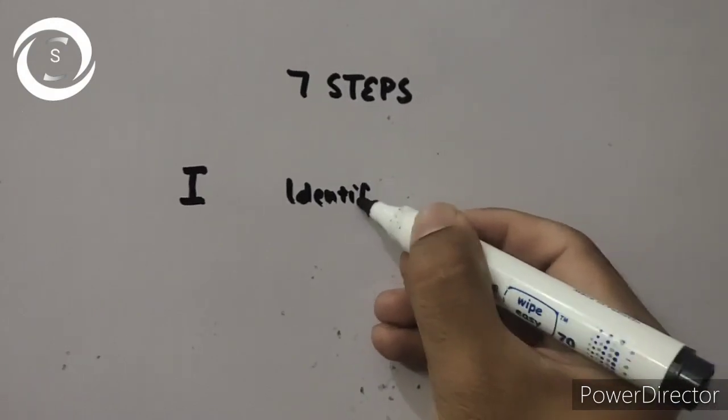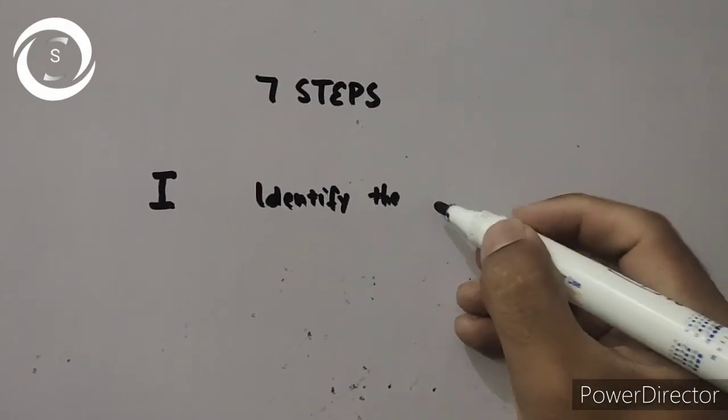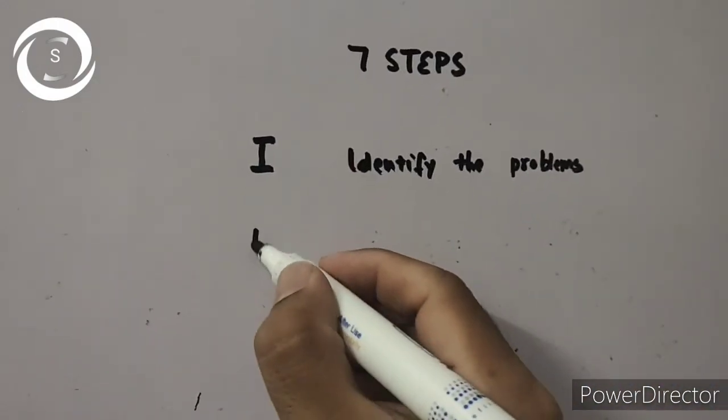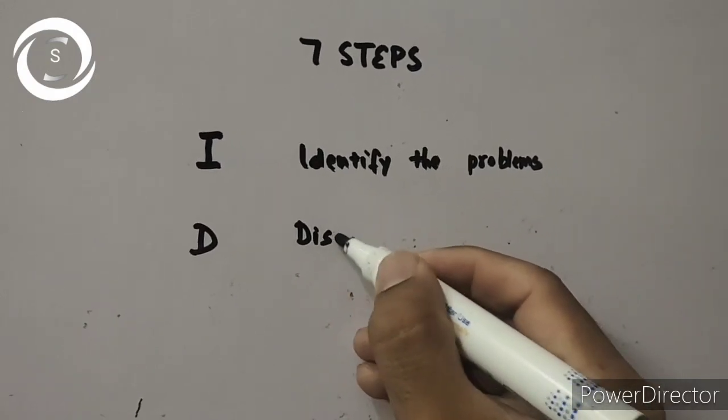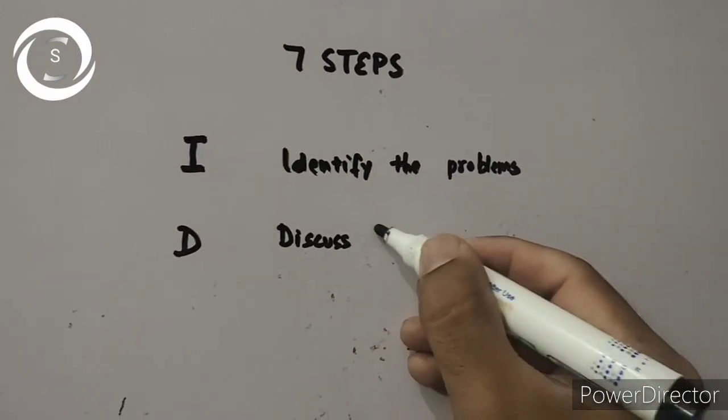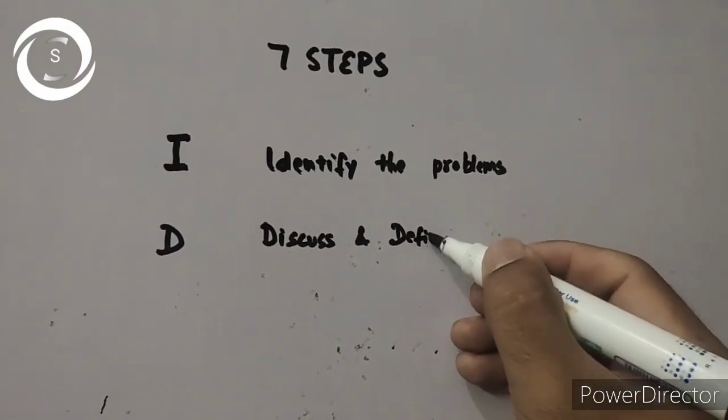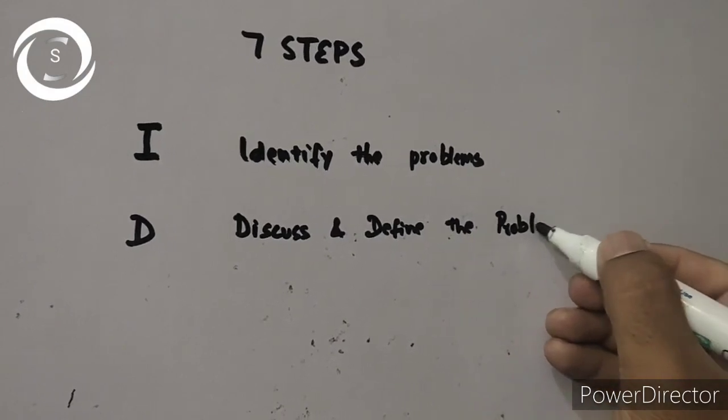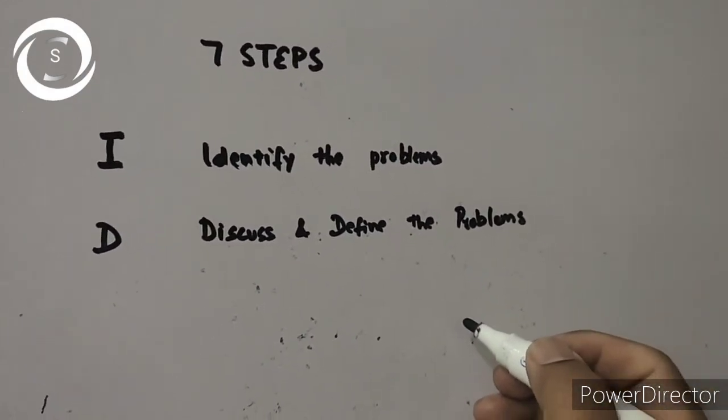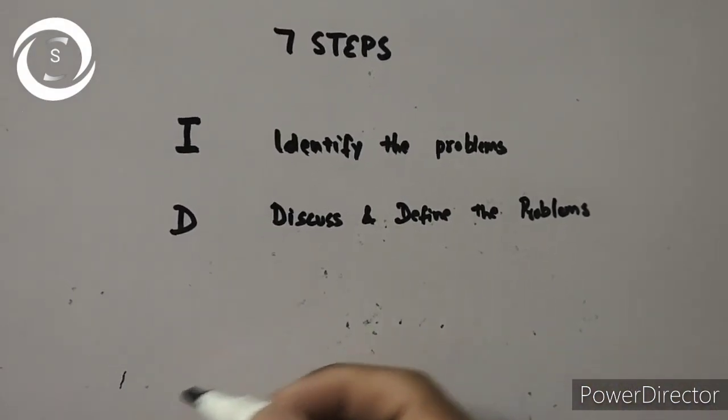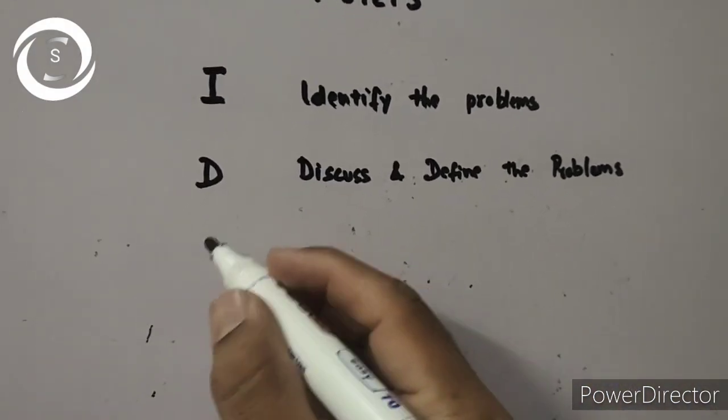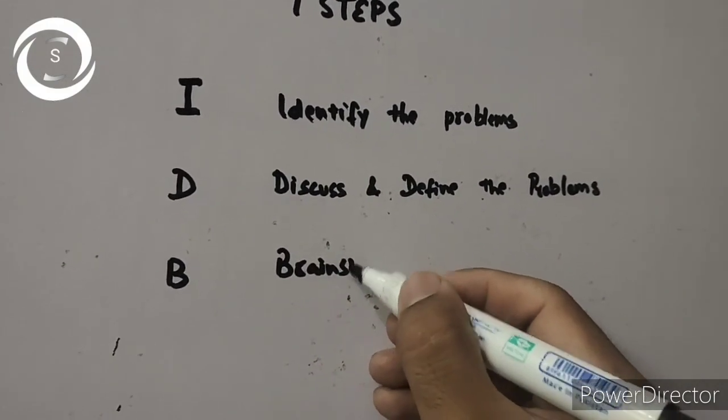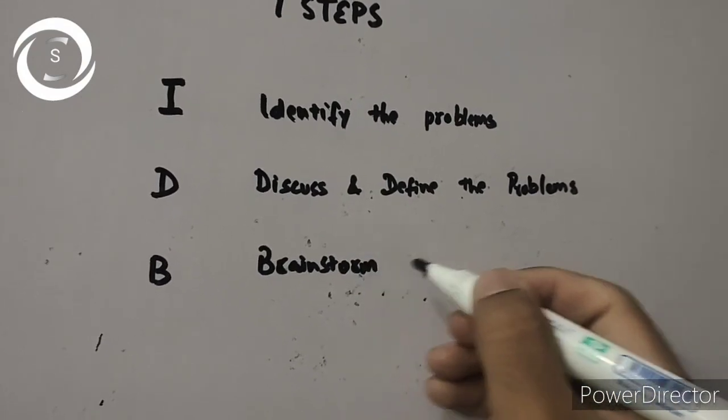Now let me tell you the seven step process of PBL. If you make mnemonics then it is easy to remember. I have made the mnemonics IDBRLPS. I for identify the unfamiliar terms present in the scenario or identify the problems, then D discuss and define the problems in the scenario, then B brainstorming session to discuss the problems in the scenario.